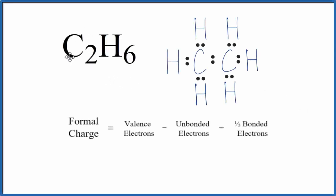To find the formal charge for each element in C2H6, that's ethane, we'll use this Lewis structure and this equation. So let's start out and just do this hydrogen here.